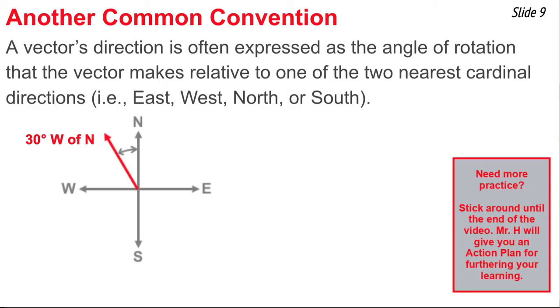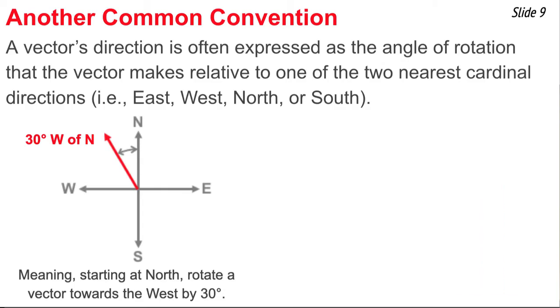For instance, this vector that you see in the diagram is pointing 30 degrees west of north. In saying it this way, what we mean is that if you started the vector at north and then rotated it, you can either rotate it eastward or westward from north. In saying it's 30 degrees west of north means that we're rotating it towards the west cardinal point by an angle of 30 degrees.